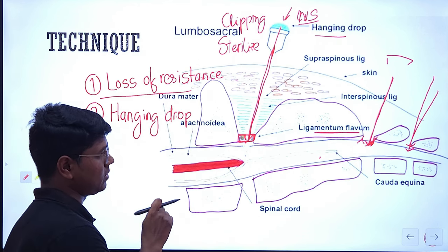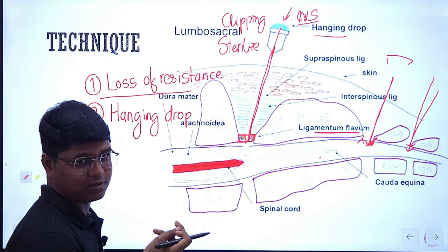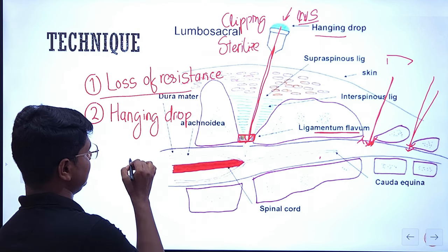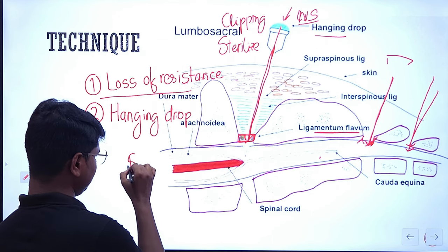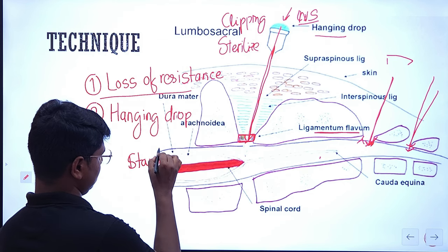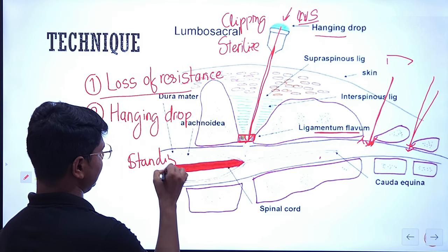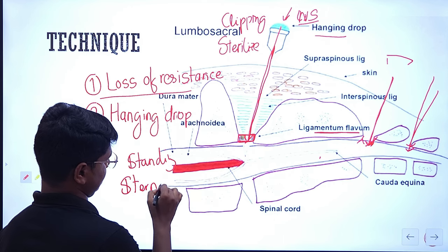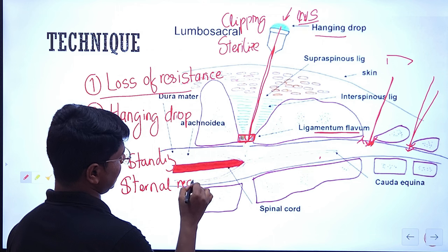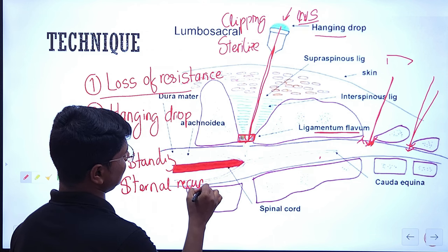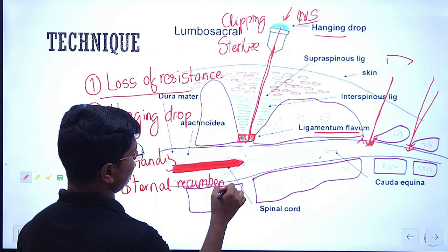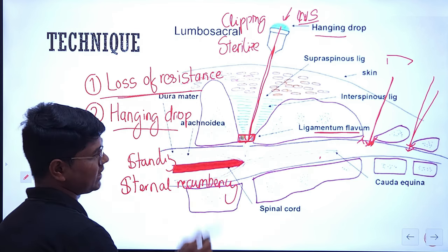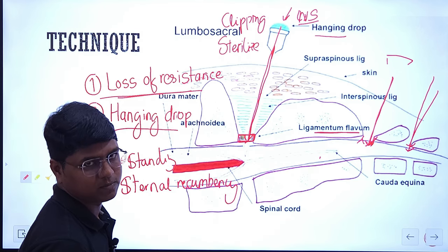Remember, the hanging drop technique can only be applied when the animal is standing or in sternal recumbency. If the animal is in lateral recumbency, only the loss of resistance technique will guide you — you cannot do the hanging drop in lateral recumbency.